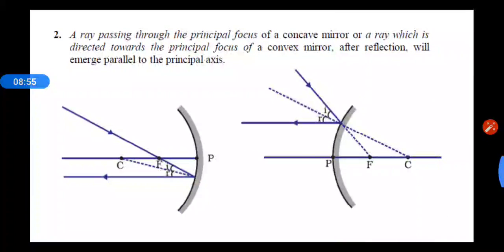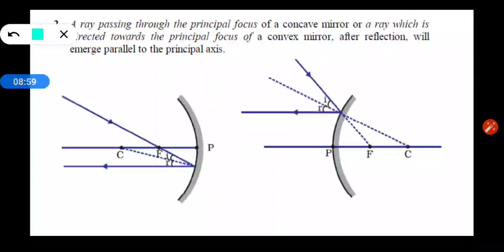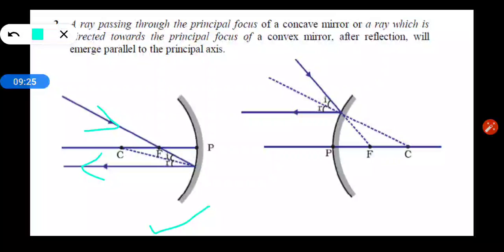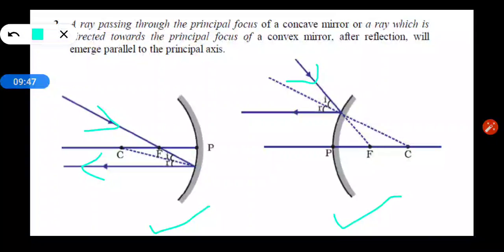In the second case, we consider the opposite scenario. If the incident ray passes through the principal focus of a concave mirror, after reflection the reflected ray goes parallel to the principal axis — just the reverse of the first rule. Similarly for a convex mirror, if the incident ray is directed towards the principal focus, the reflected ray will go parallel to the principal axis.